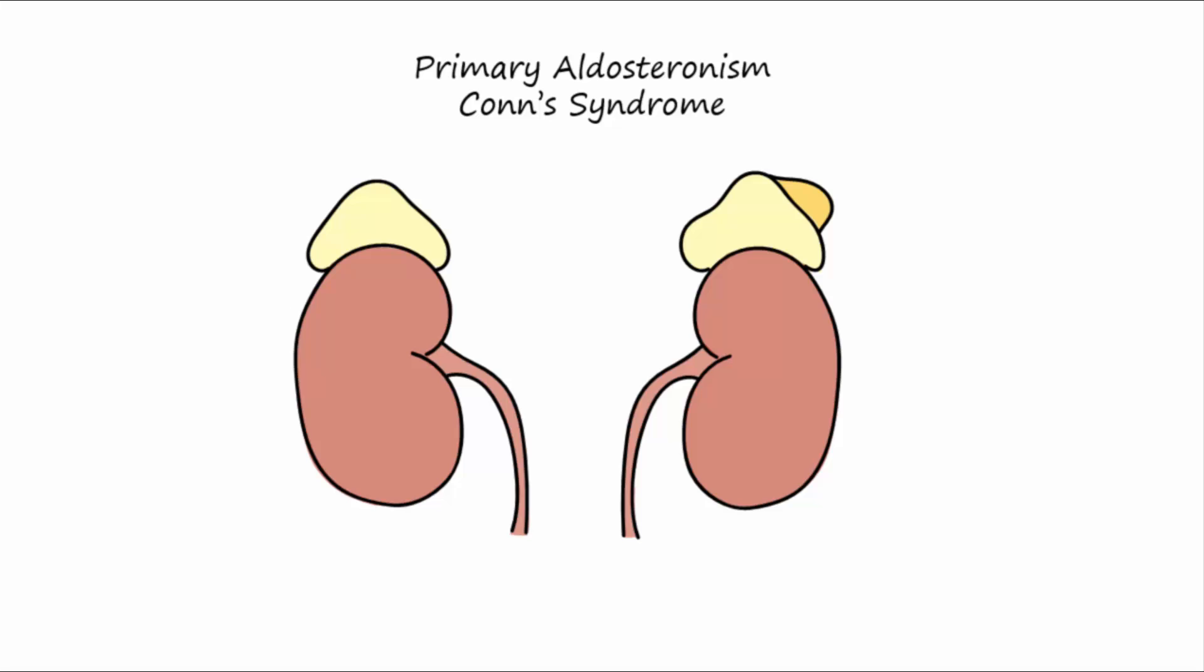In some individuals, a tumor can form in the zona glomerulosa cells. This is usually a single, benign tumor that will secrete large amounts of aldosterone. This condition is called primary aldosteronism or Conn's syndrome.